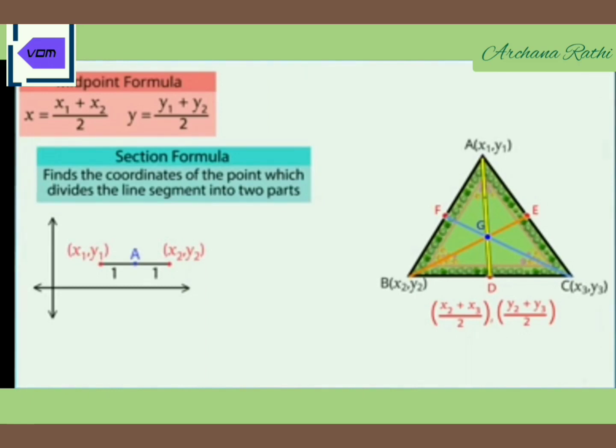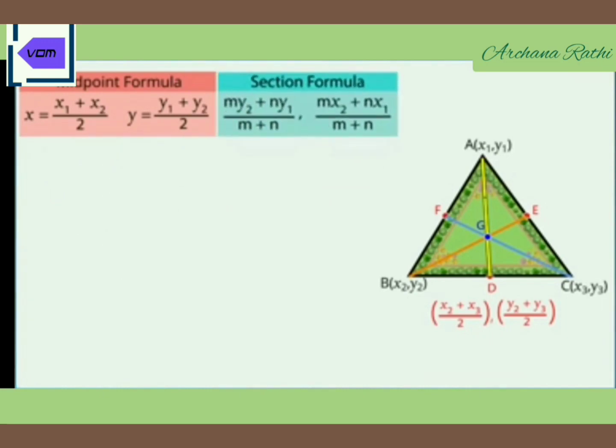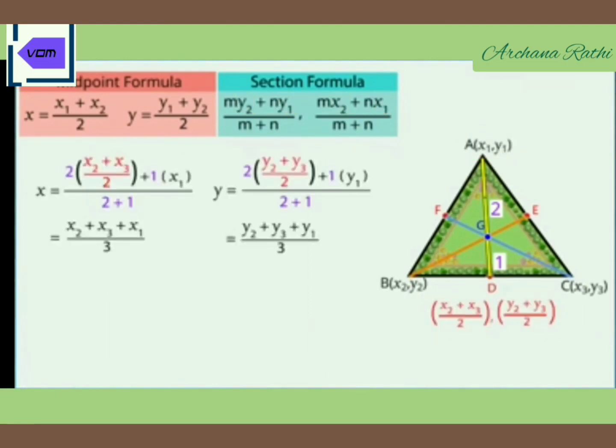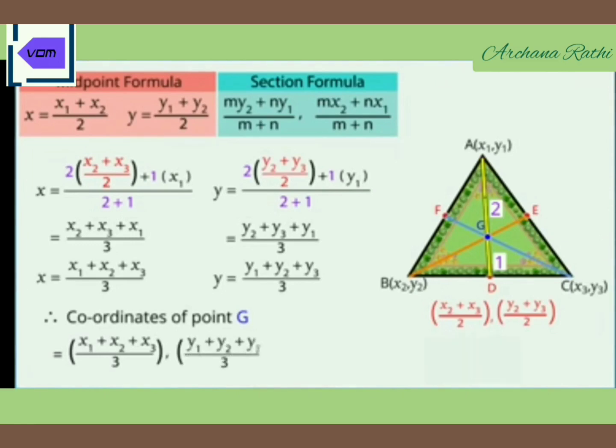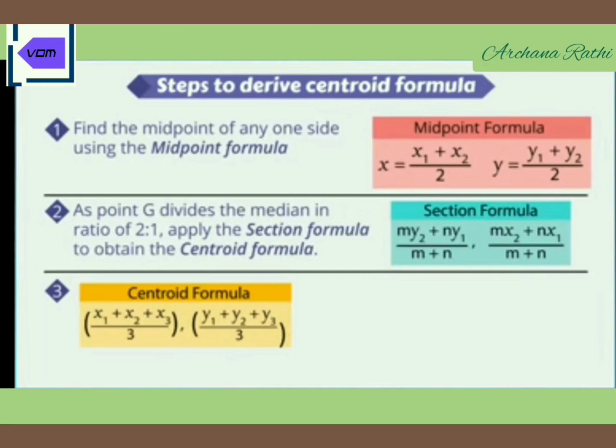Here m = 2 and n = 1, x2 is (x2 + x3)/2 and y2 is (y2 + y3)/2. Putting these values of coordinates in the section formula, and after simplifying, we will get the coordinates of point G: x = (x1 + x2 + x3)/3 and y = (y1 + y2 + y3)/3. Like that, we can directly find the coordinate of the centroid. Revise these steps and write this derivation of the centroid formula.